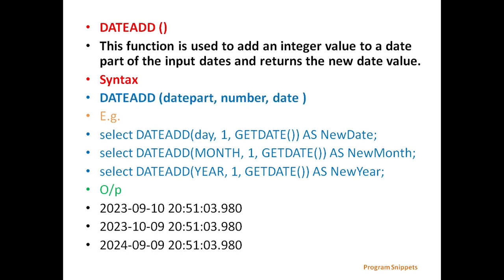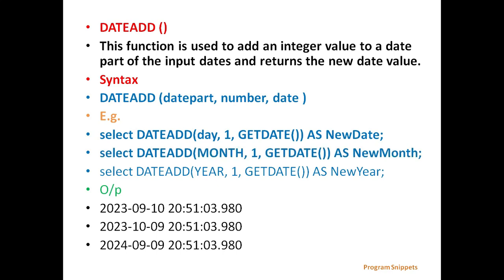The general syntax is dateAdd with parameters datePart, number, and date. For example, if we give the query select dateAdd with day, 1, getDate, it will add one day to the current date. Similarly, dateAdd with month, 1, getDate will add one month, and dateAdd with year, 1, getDate will add one year to the current date.